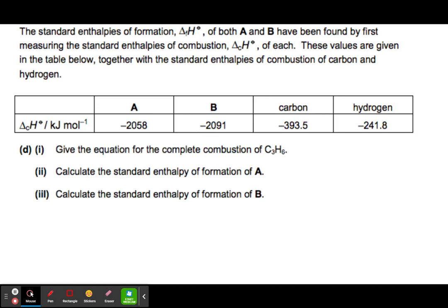Now, this is where year 12s might find it a bit trickier, especially if you're in year 11. We're moving on to standard enthalpies of formation. Let's just read the question first. The standard enthalpies of formation of both A and B have been found by first measuring the standard enthalpies of combustion of each. These values are given in the table below, together with the standard enthalpies of combustion of carbon and hydrogen. We get this data and we're going to have to calculate some things.